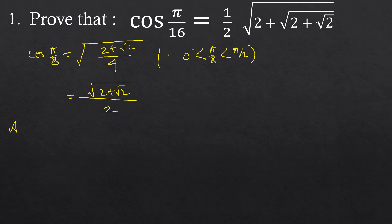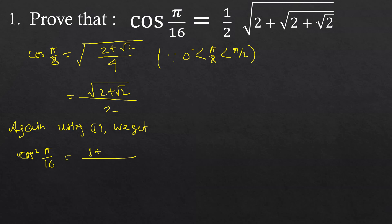Again using identity 1, we get cos²(π/16) is equal to (1 plus cos(π/8)) by 2. This implies (1 plus cos(π/8)), where cos(π/8) equals √(2 plus √2) by 2, divided by 2.